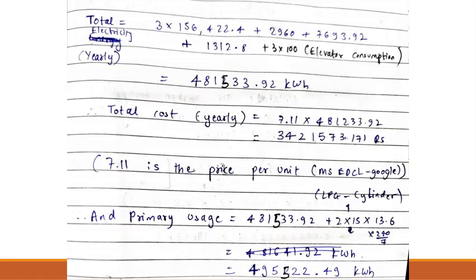So the total yearly cost that we have for our hostel, effectively for the electrical energy, and we also add up the LPG, comes up to around 3.42 crores. And 7.11 rupees is the price per unit that MSEDCL tariff rates suggest.